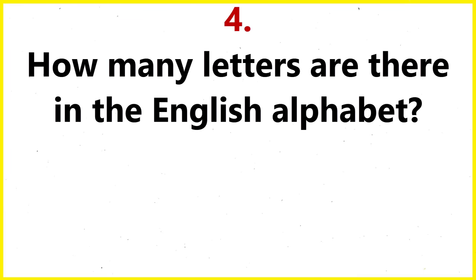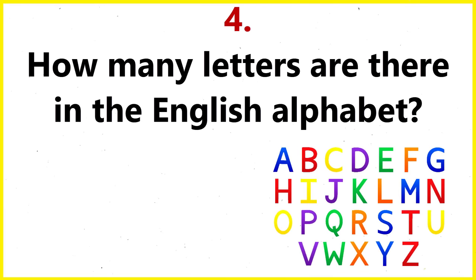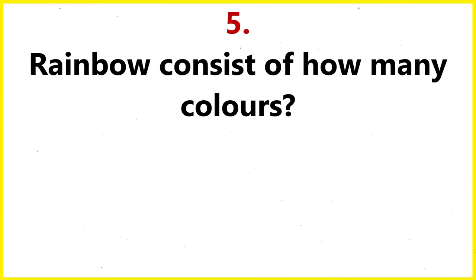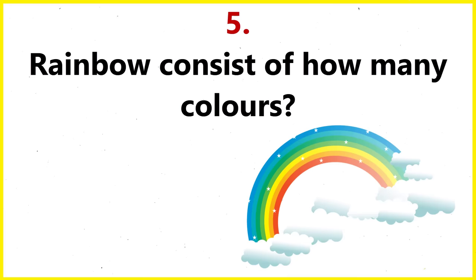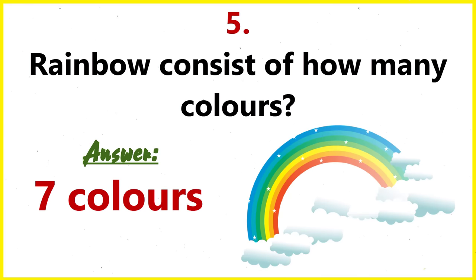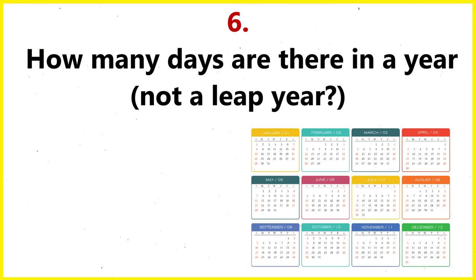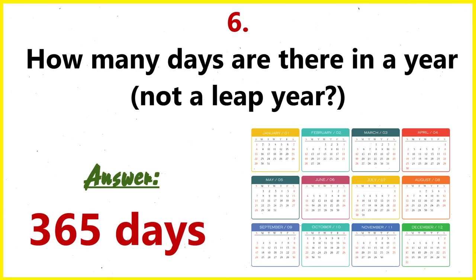How many letters are there in the English alphabet? 26 letters. Rainbow consists of how many colors? 7 colors. How many days are there in a year, not a leap year? 365 days.